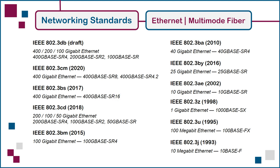The most recent initiative is to specify multiple wavelengths per fiber to reduce the number of fibers needed. For example, a 400 Gigabit SR4.2 connection uses four fibers with two wavelengths to transmit and another four fibers with two wavelengths to receive, for a total of eight fiber strands. Each wavelength operates at 50 gigabits per second, so a strand with two wavelengths either transmits or receives 100 gigabits per second.